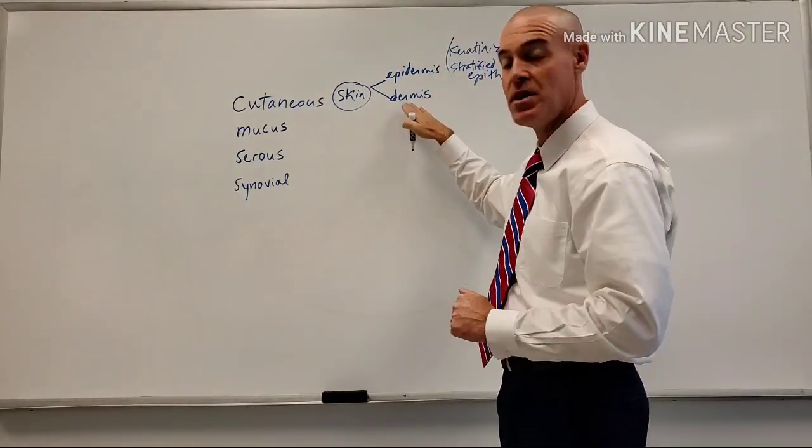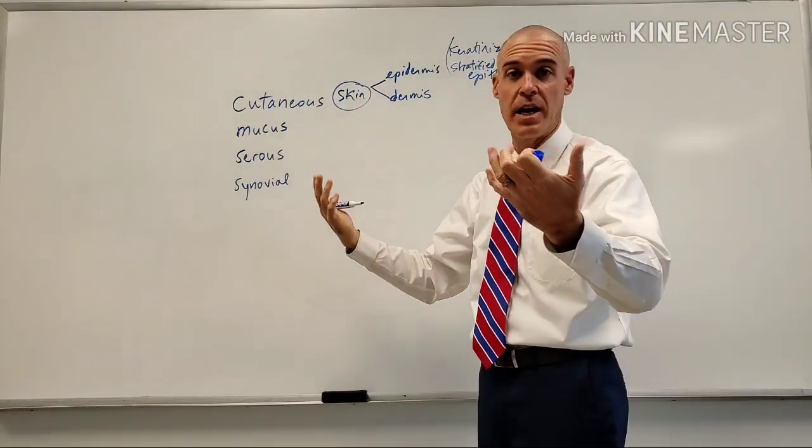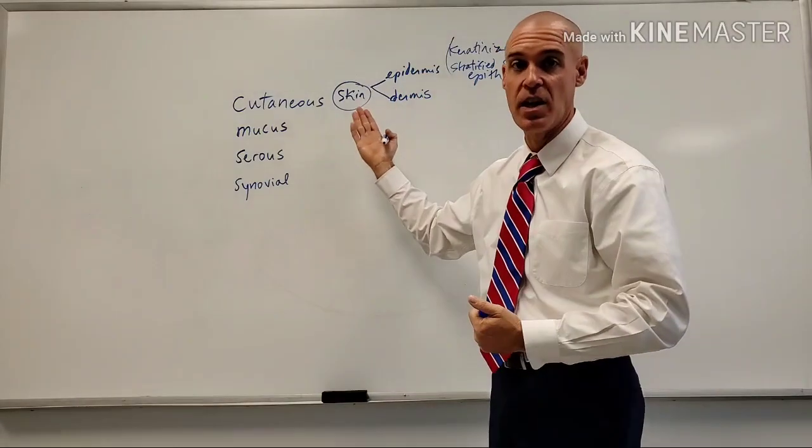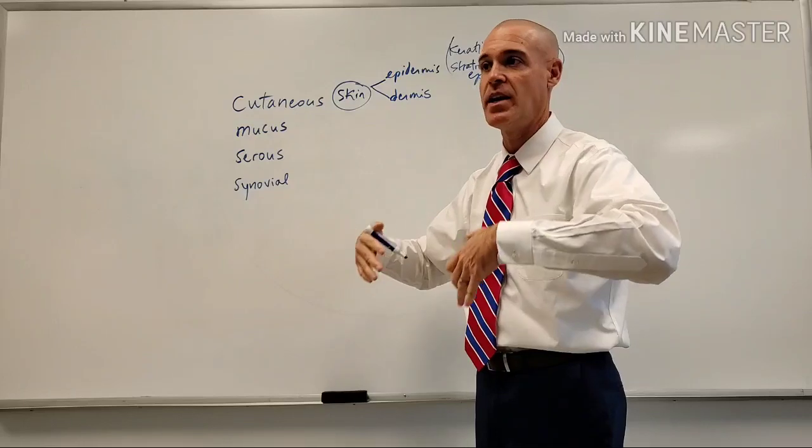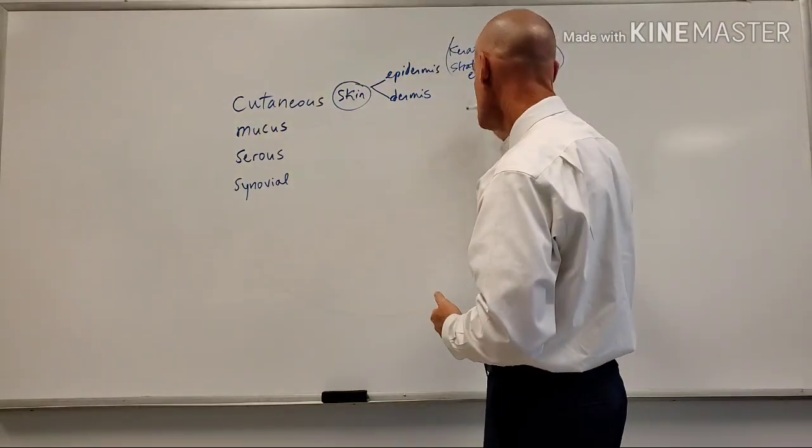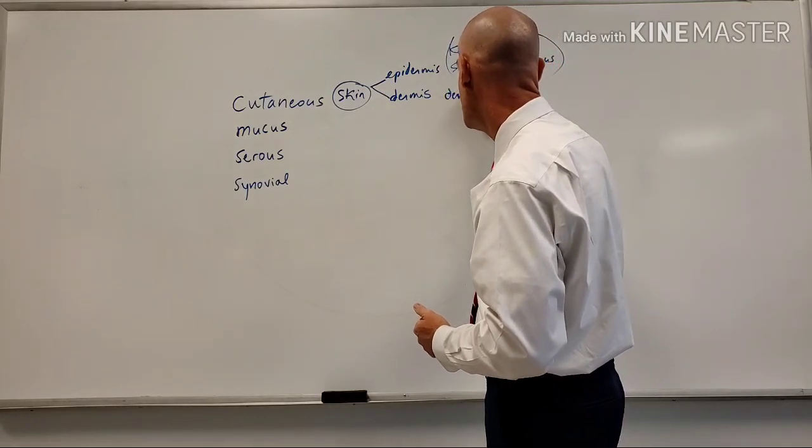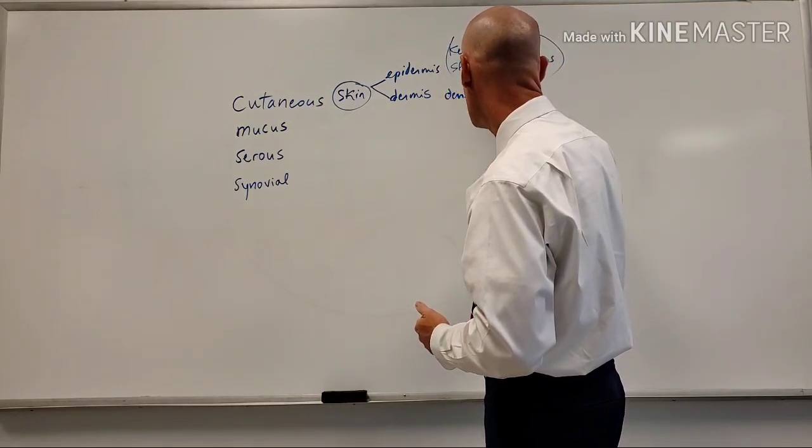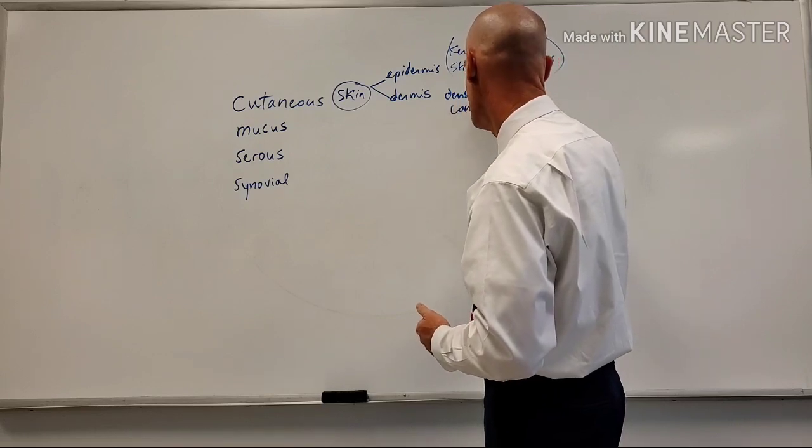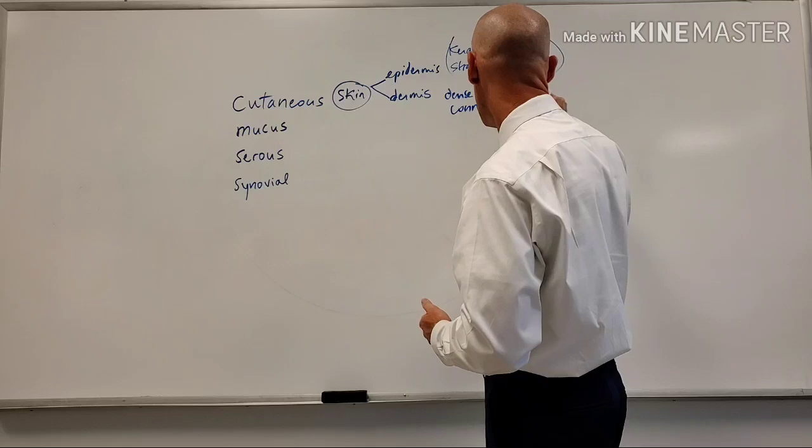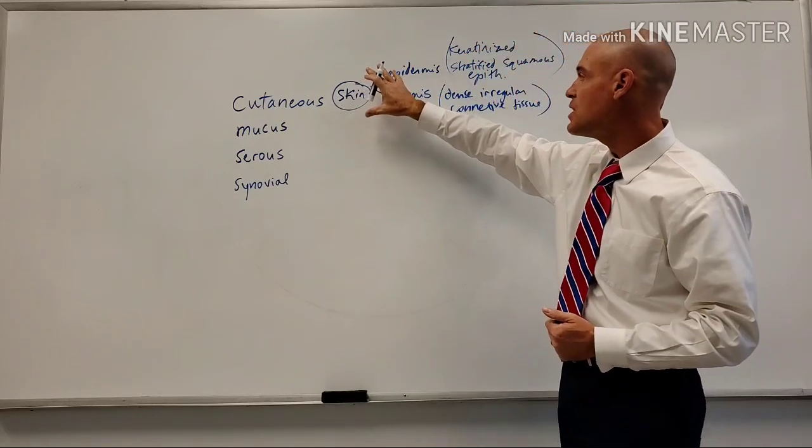The deeper layer of skin, as many of you know, is the dermis, where we find all blood vessels actually pertaining to the skin. There are no blood vessels in epidermis. We find the blood vessels, we find sweat glands, the oil glands. That is going to be connective tissue. So it's actually going to be a type of dense, irregular connective tissue.